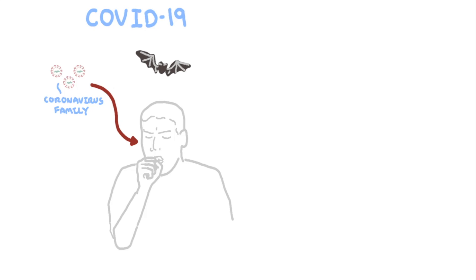COVID-19 stands for coronavirus disease 2019 and is caused by the severe acute respiratory syndrome coronavirus 2. Coronaviruses are a large family of viruses that are common in people and many different species of animals, including cats and bats.